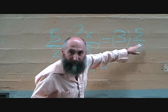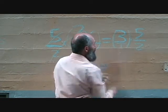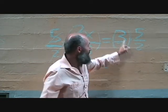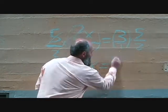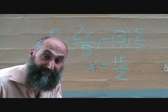So on this side, this is just the number times a fraction. That's just 3 over 1. Top multiplies top, bottom multiplies bottom. 15 over 2. It's as simple as that.